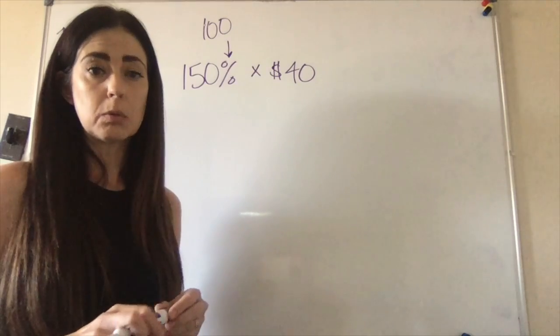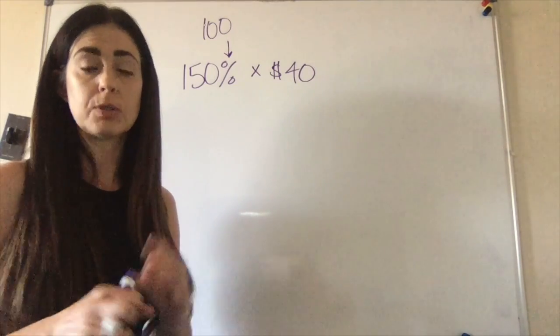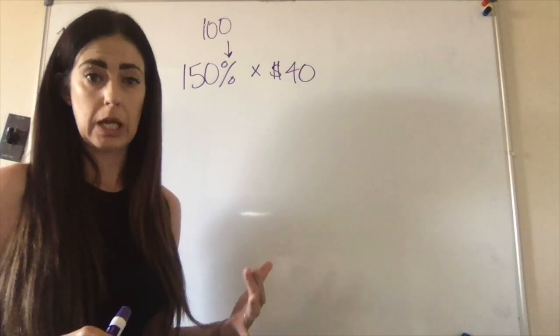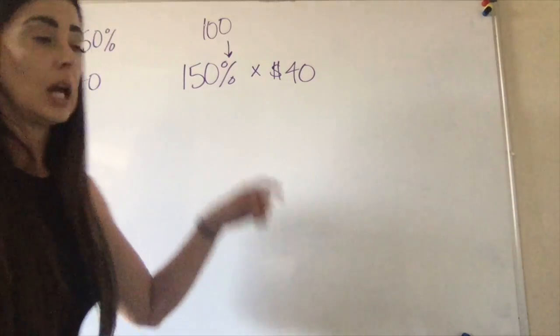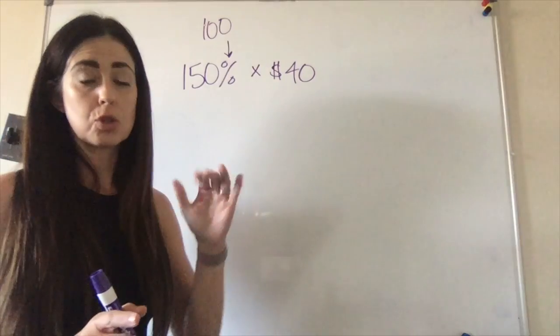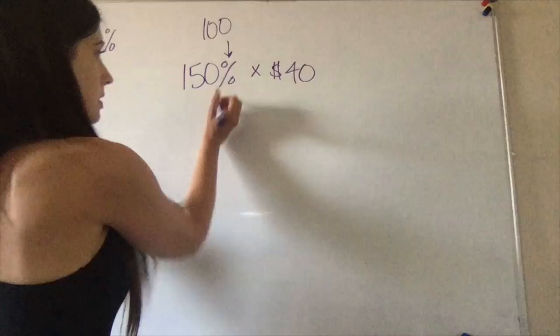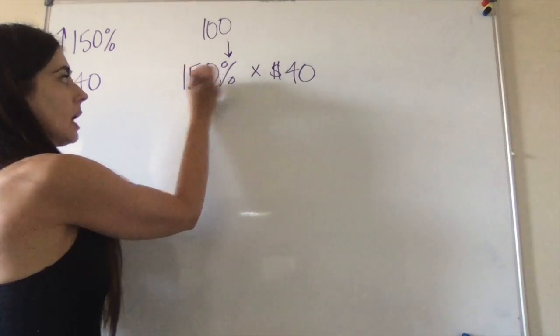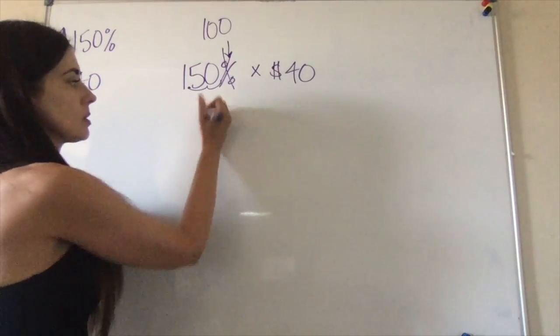...that we move the decimal place over one time for every zero in the divisor. There are two zeros in a hundred, so we're going to move the decimal place over two places and then we can drop the percent symbol. So we're going to go one, two, and drop the percent symbol. So now we have one point five times forty dollars.